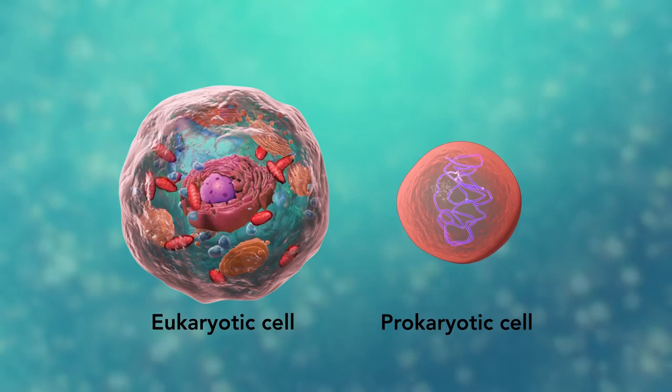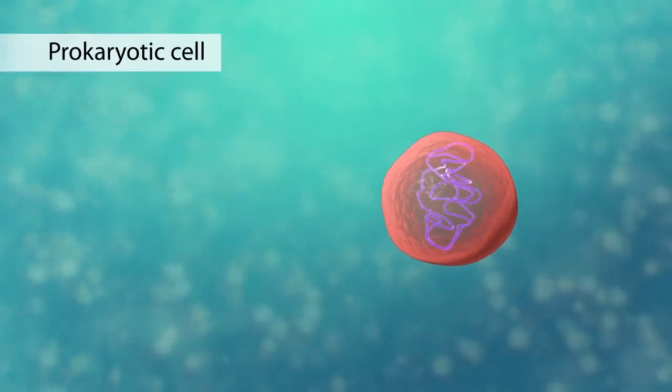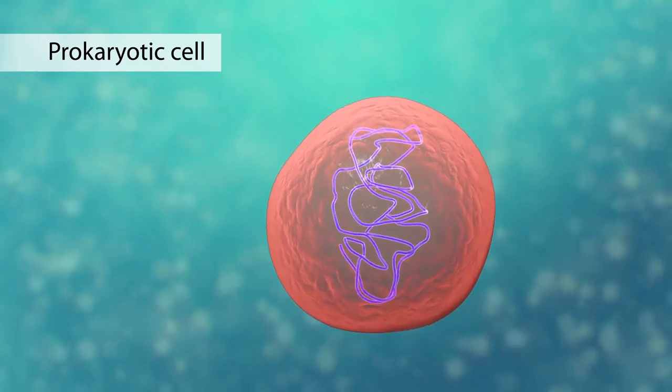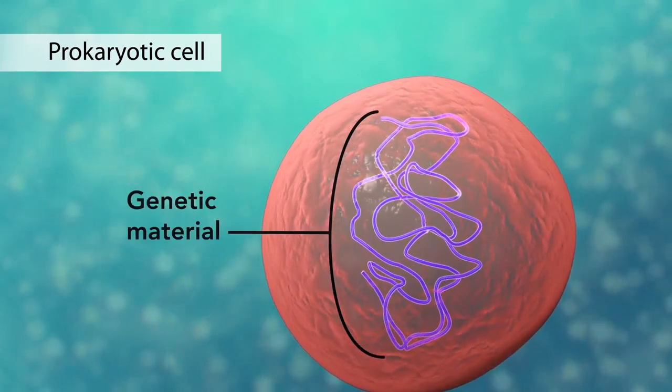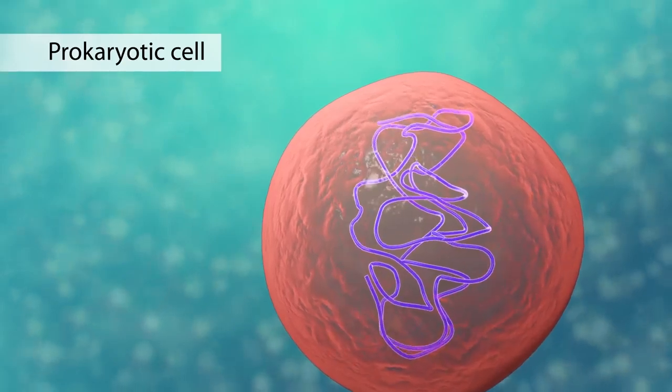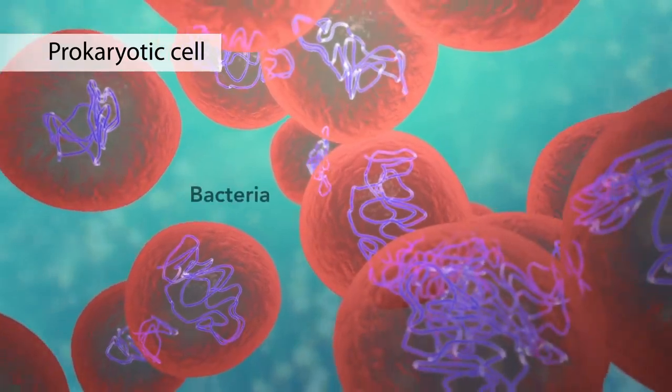The second category is prokaryotic cells. They don't have a nucleus or membrane-enclosed organelles. They do have genetic material, but it's not contained within a nucleus. Prokaryotic cells are always one-celled or unicellular organisms such as bacteria.